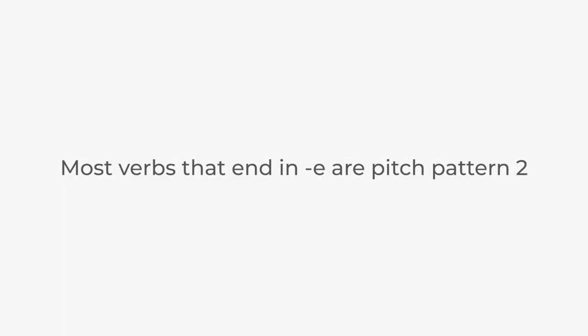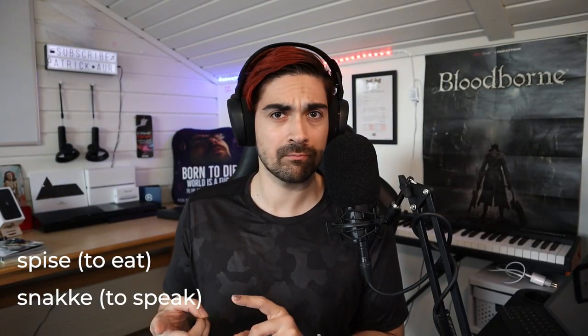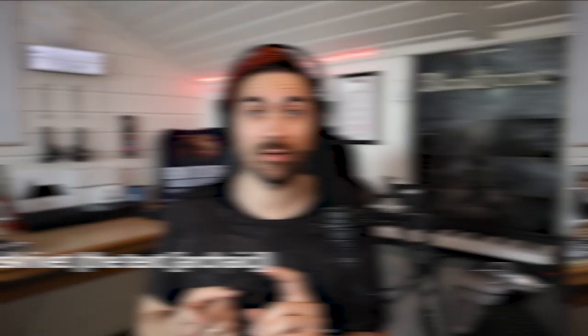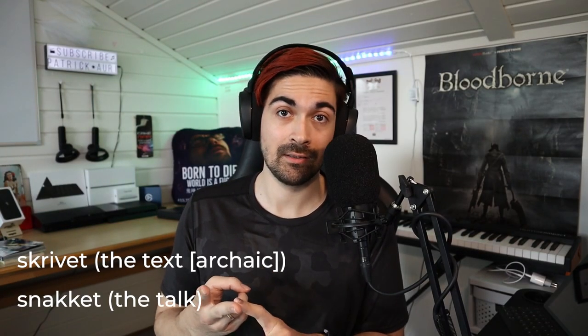Now how do you memorize all of this? A lot of it is arbitrary and you just have to listen and become aware of it. But there are some things you can remember. A lot of verbs that end with -e are pitch Pattern 2: spise, snakke, drikke, skrive. And a lot of nouns in the definite form are Pattern 1: skrive, snakke, løpe, hoppe. When you become aware of this and pay attention to it in everyday speech — all the Norwegian you listen to on a day-to-day basis — I have no doubt it will improve your listening skills and deepen your understanding of Norwegian.